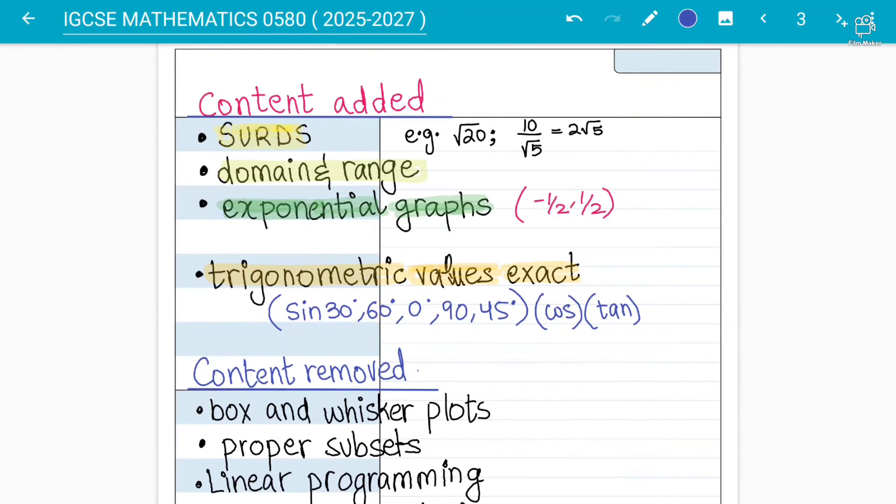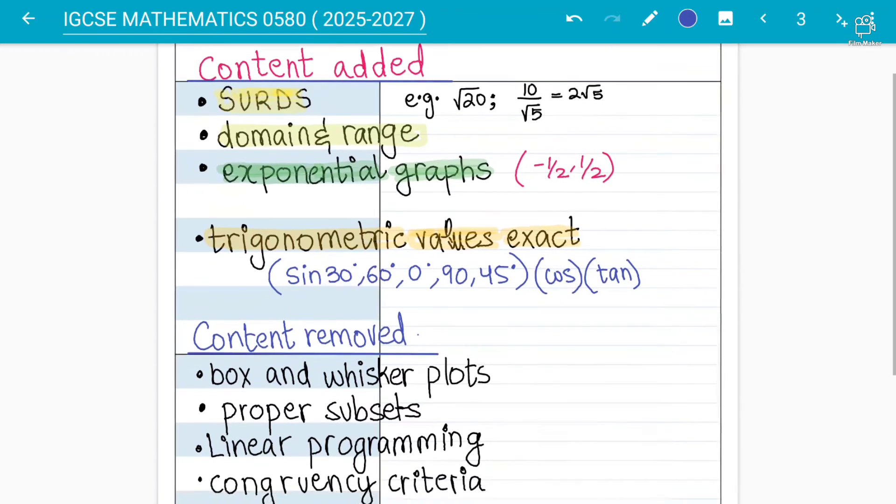Because trigonometric solving was already there in IGCSE maths 0580, so now which means that there is a hint as well - a trigonometric question may come in paper two as well. So you must know the values for 0, 30, 45, 60, 90 for sine, cos and tan. So these are the most important things that are added.